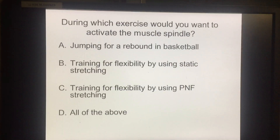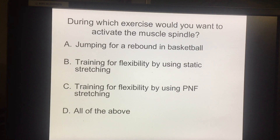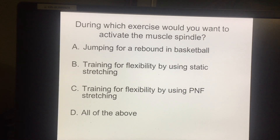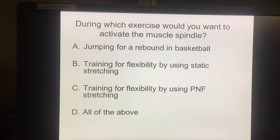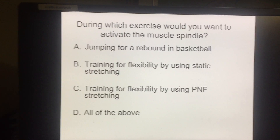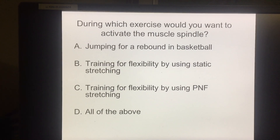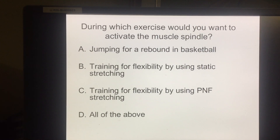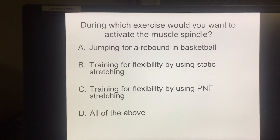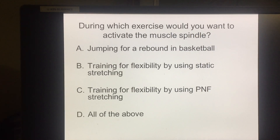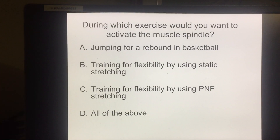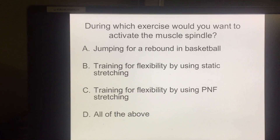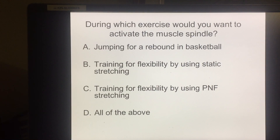During which exercise would you want to activate the muscle spindle? Options: jumping for a rebound in basketball, training for flexibility with static stretching, training for flexibility using PNS stretching, or all of the above. The correct answer is A — jumping for a rebound in basketball. When you activate the stretch reflex via the muscle spindle, it causes reflex contraction of the muscle. When jumping for a rebound, you first do a counter-movement — going down before jumping up — inducing a rapid stretch that activates the muscle spindle and gives you a higher jump. The muscle spindle is really important for sports involving jumping and power output.